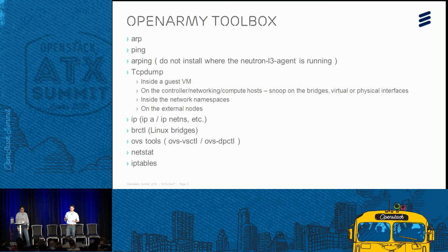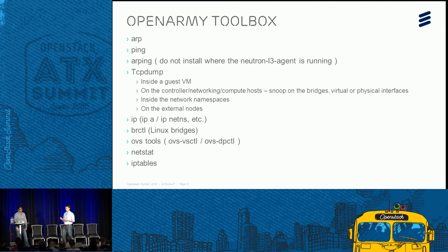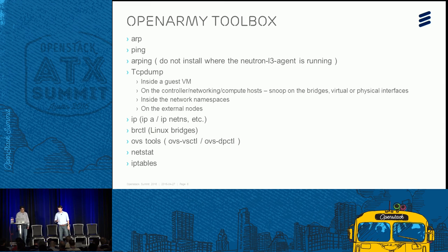TCP dump is by far one of the most useful tools we've come across. There are limitations though — if you're using DPDK or SRV, TCP dump doesn't really do what you'd want it to do. There are ways around it and we can talk about that as well. Other key tools include IPA, bridges, OVS, NETStat, and IP tables.